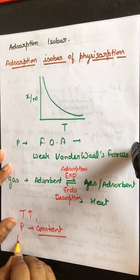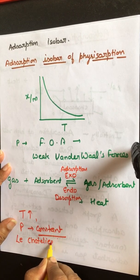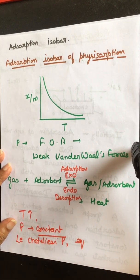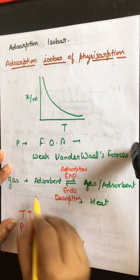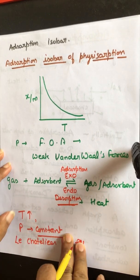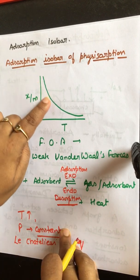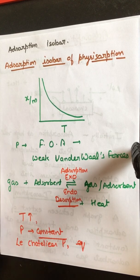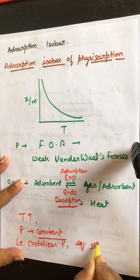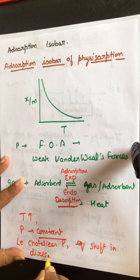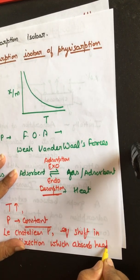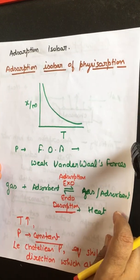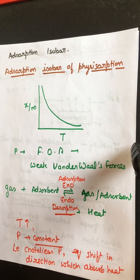According to Le Chatelier's principle, equilibrium shifts in the direction which absorbs heat — that is, the endothermic side. The endothermic side is the backward process, which is desorption. This means as temperature increases, the extent of adsorption decreases.